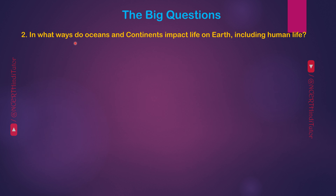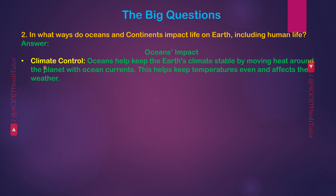Question 2: In what ways do oceans and continents impact life on Earth, including human life? Answer — Oceans impact. First, climate control: oceans help keep the Earth's climate stable by moving heat around the planet with ocean currents. This helps keep temperatures even and affects the weather.